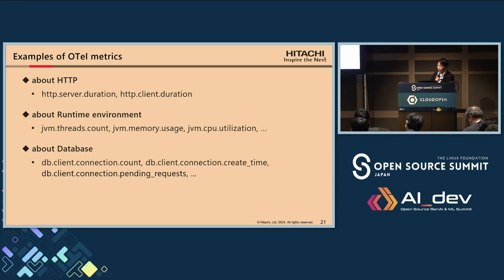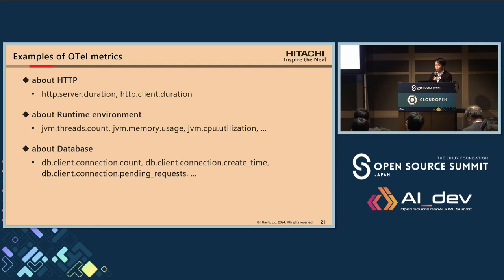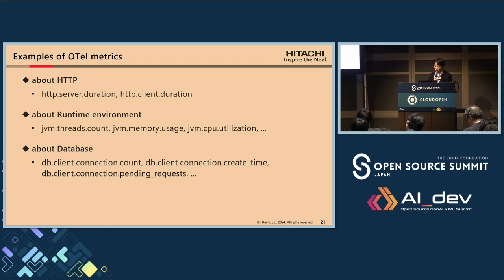Since these are metrics, they include statistical values like average, maximum, and minimum. Database connection metrics show data such as number of connections at each time, time taken to create a connection, and the number of pending requests.